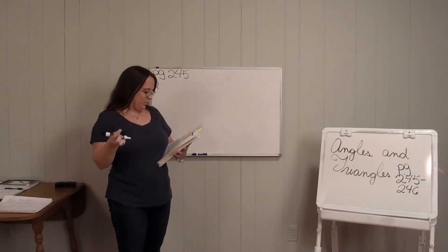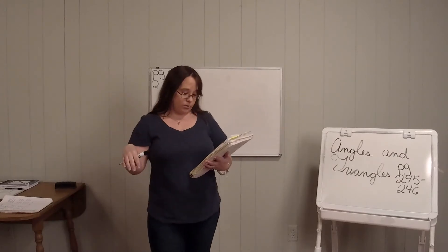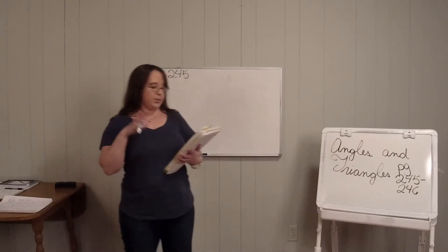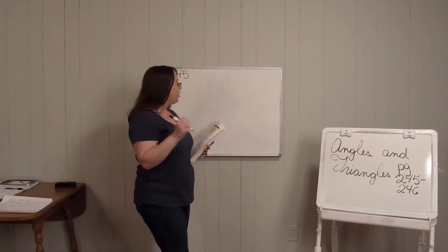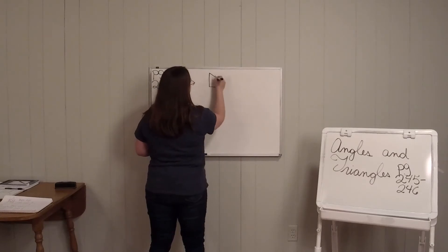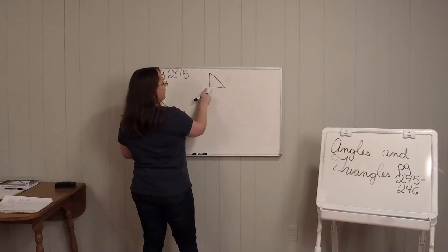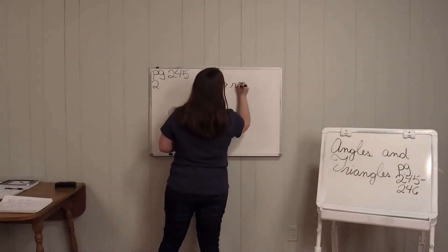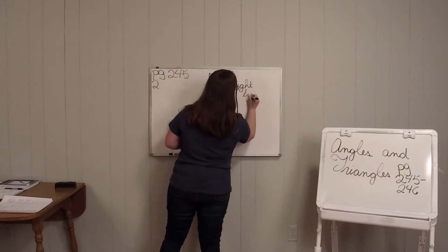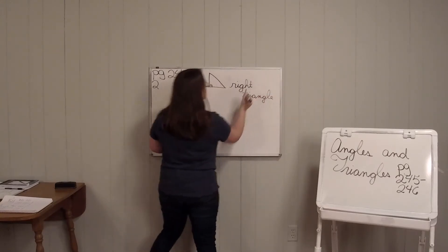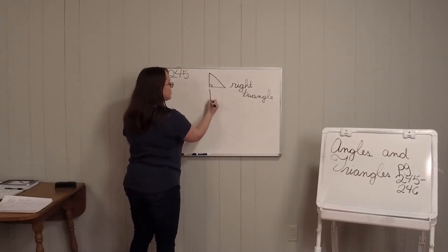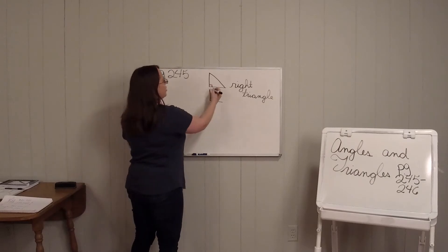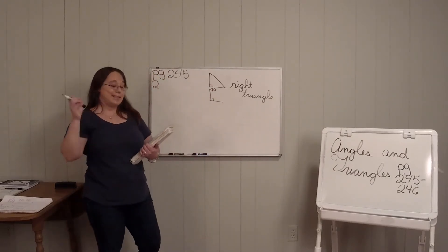Well, I guess we need to talk about the triangles first. Let's look at number two A, because we talked about this type of angle. This is the triangle it gives you. But if you look right here, that is a right angle. If it's a right angle, it's also called a right triangle. You can put the box in — that's a right angle, also considered a right triangle. That angle is always 90 degrees.